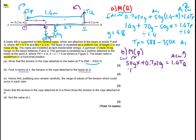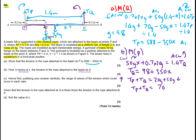Solving for Tq — divide by 1.4 and multiply by 9.8 — gives Tq equals 98 plus 350x. You can also just resolve upwards: Tp plus Tq equals 20g plus 50g, which is 70g. You know Tp from part a, so substituting that in gives the same answer.